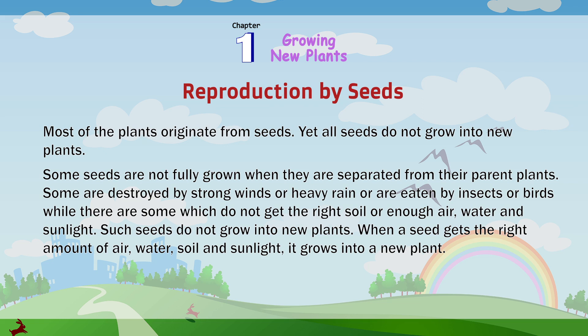When a seed gets the right amount of air, water, soil and sunlight, it grows into a new plant.